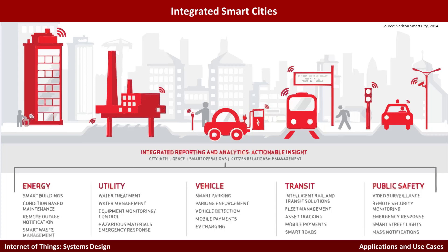Finally, there is the concept of integrated smart cities, which means rather than looking at smart city applications individually, you think of smart cities as one integrated system. In this view, you bring together energy, utilities, vehicles, transit, and public safety — each with different types of applications. This is a different way of looking at IoT, packaging different aspects specific to smart cities together in a meaningful way.